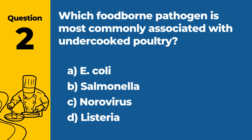Question 2: Which foodborne pathogen is most commonly associated with undercooked poultry? A. E. coli. B. Salmonella. C. Norovirus. D. Listeria. Answer: B. Salmonella. Salmonella is the foodborne pathogen most commonly associated with undercooked poultry.